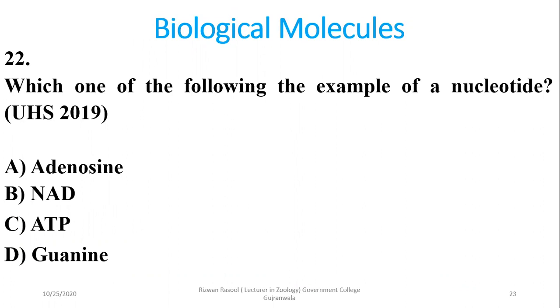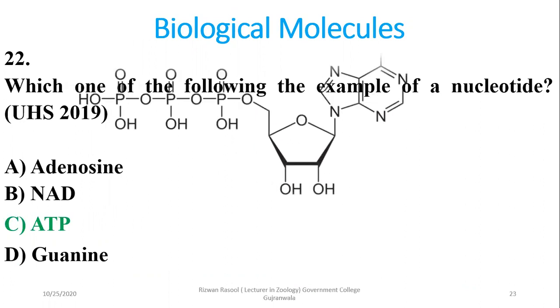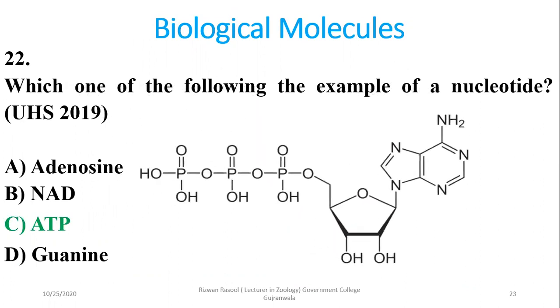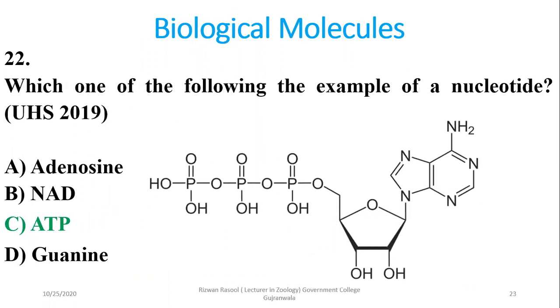Question 22: Which of the following is an example of a nucleotide? Adenosine is a nucleoside, NAD is a dinucleotide, and guanine is a nitrogenous base — but ATP is an example of a nucleotide.